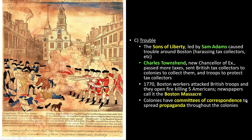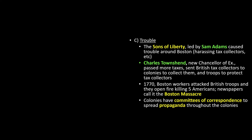The colonies had committees of correspondence — little committees set up in every colony whose job was to spread propaganda: information that may or may not be accurate, trying to get you to look at something a specific way. The image made it look like the Americans were innocent — not clubbing British soldiers with three-foot clubs — and that the British just randomly opened fire on innocent colonists. After trial in the colonies, the British soldiers were acquitted and shown to have fired in self-defense, but it didn't matter. That picture convinced everybody that the British were cold-blooded murderers.